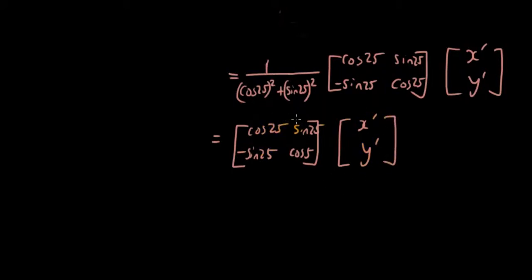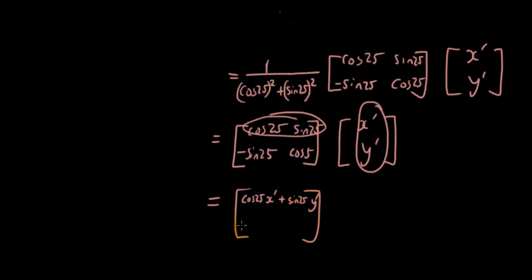And then if you do the basic multiplication for matrices, the row in the first matrix times by the column in the second matrix, cos 25 times x' plus sin 25 y', and in the second element, you will get negative sin 25 x' plus cos 25 y'.